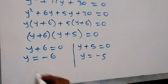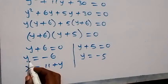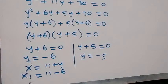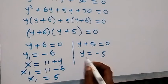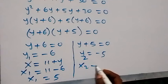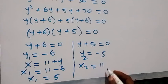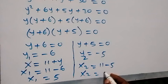For x1, using y1 equals minus 6: x1 equals 11 plus (minus 6), so x1 equals 5. For x2, using y2 equals minus 5: x2 equals 11 plus (minus 5), so x2 equals 6.